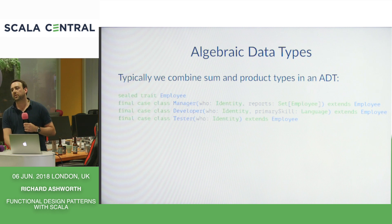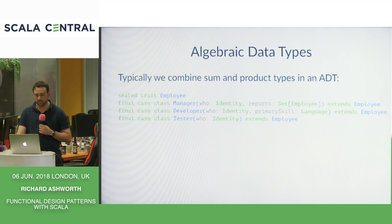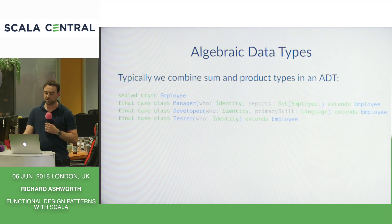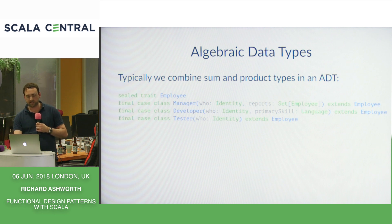It gets a little more interesting when we combine sum and product types in ADTs. For example, if we're trying to model a development team, an Employee can be a Manager, a Developer, or a Tester — giving us our sum type. Managers might have a set of reports which are themselves Employees, making this recursive. We might also say a Developer has a primary skill, which is one of the Language types. We're going to use this as an example to introduce the next pattern, which is about manipulating state.